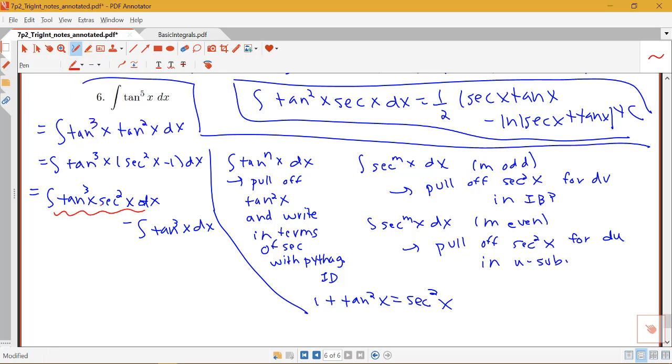This first one has a secant squared already nicely pulled off for me. And notice that if I let u be tangent, then du will be secant squared. So I can use u substitution on this part.